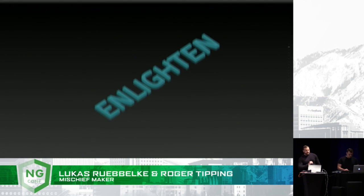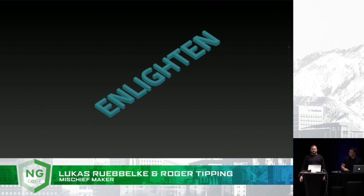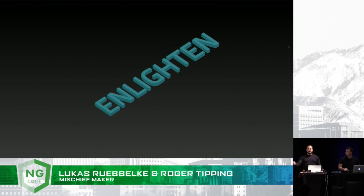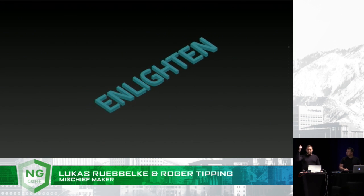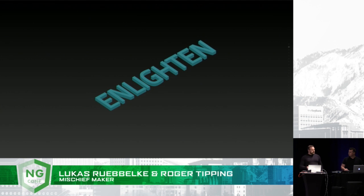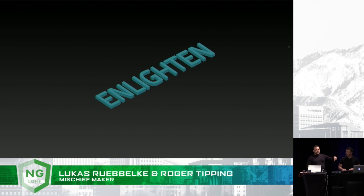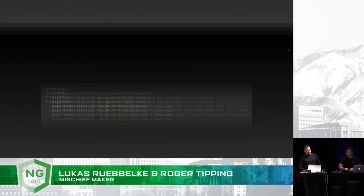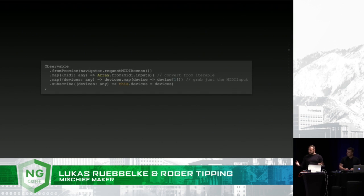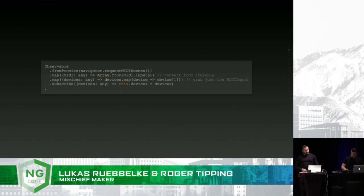Now the first step to enlightenment is to connect to a higher power. And by higher power, I mean this keyboard. I could do this with a promise, but because I am shiny, I'm going to become one with Observable.